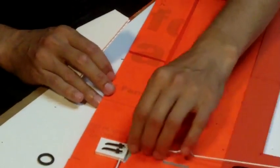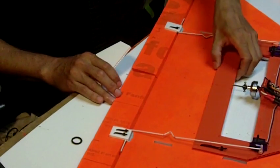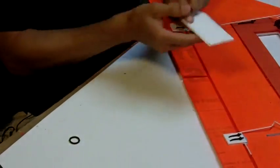So when you attach, when you calculate the length of these control rods and attach the control horns that we have there, we want it to have about this much up trim.